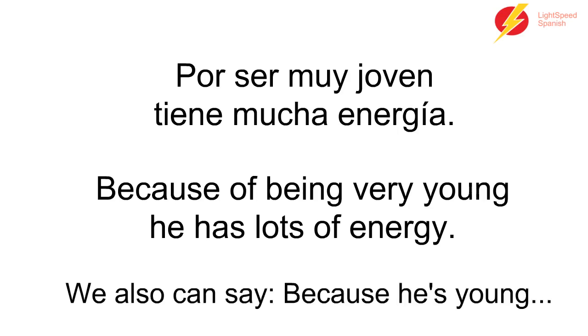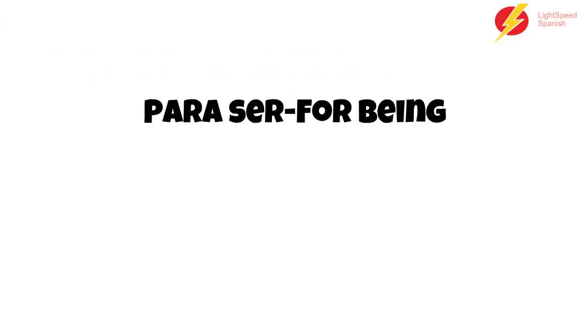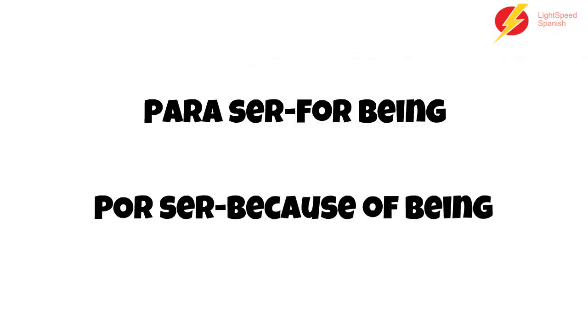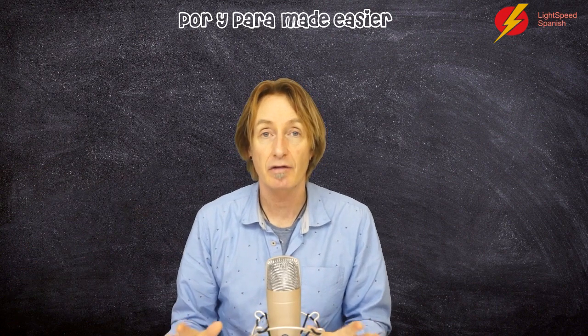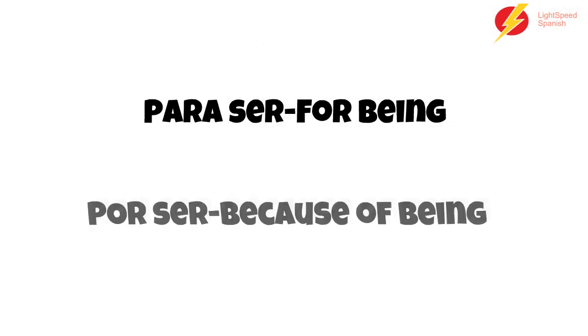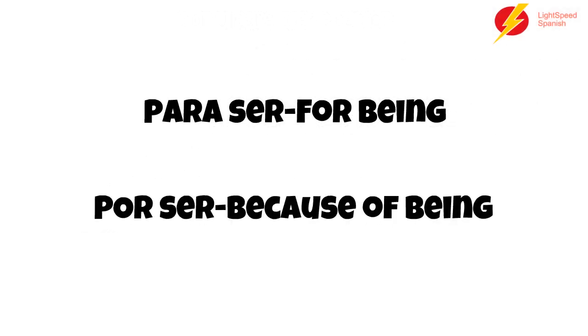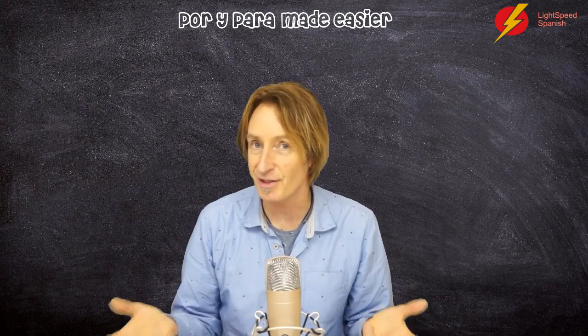So that's the difference. Sometimes we can get confused about those two — are we saying 'for being young' or 'because of being young'? Typically in English we'll say 'because he's young, he has lots of energy', and in Spanish they use por ser. So we have para ser — that's a comparison, the 'for being' — and then we have por ser — that's 'because he or she is'. Those are two ways that por and para are used that look similar but mean very different things.